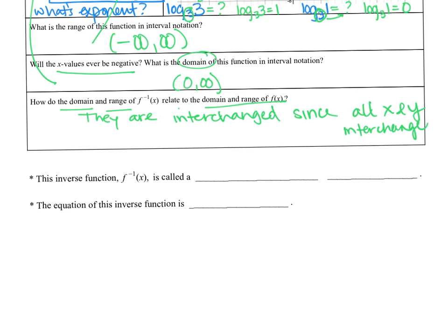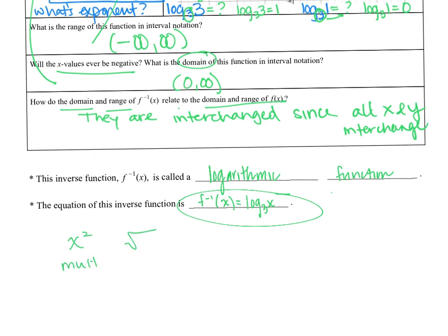To finish this page: the inverse f inverse of x is called a logarithmic function, and its equation is log base 3 of x. Remember that the log undoes the exponential function — just like square root undoes squaring, division undoes multiplication, or cubing undoes a cube root. When asked what undoes an exponential function, the answer is the log. And what undoes the log? The exponential function. They undo each other — they are inverses.